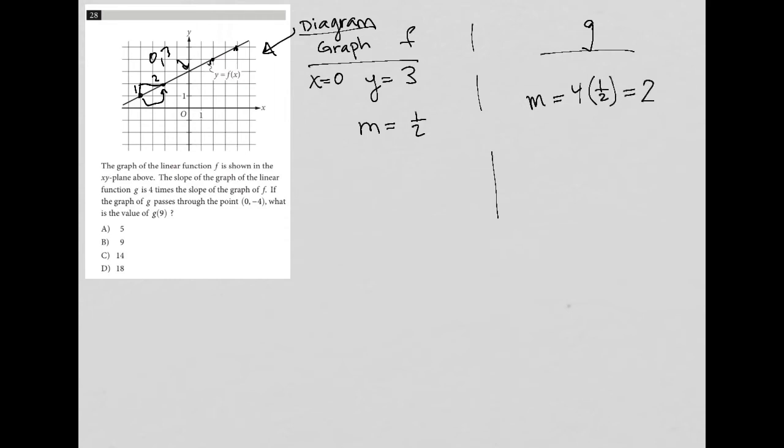If the graph of g passes through the point (0, -4), now I know that m equals 2, and I know that we have a point that is (0, -4), which in essence also tells me—if I think about this from a y = mx + b format—that here is my 2.